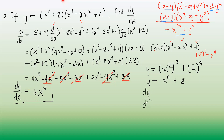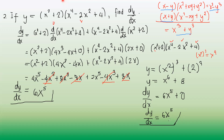Now differentiating y = x⁶ + 8: dy over dx equals 6 times x raised to 6 minus 1, which is 6x raised to 5, plus derivative of 8 which is 0. So dy over dx equals 6x to the 5th. We have the same answer using a different solution method — simplify first, then differentiate.